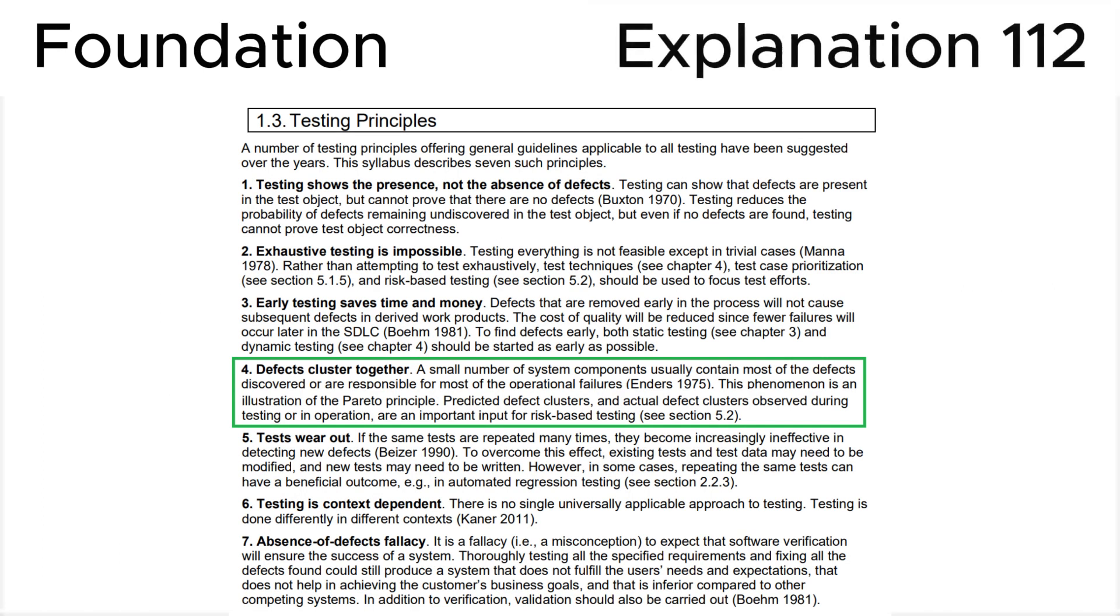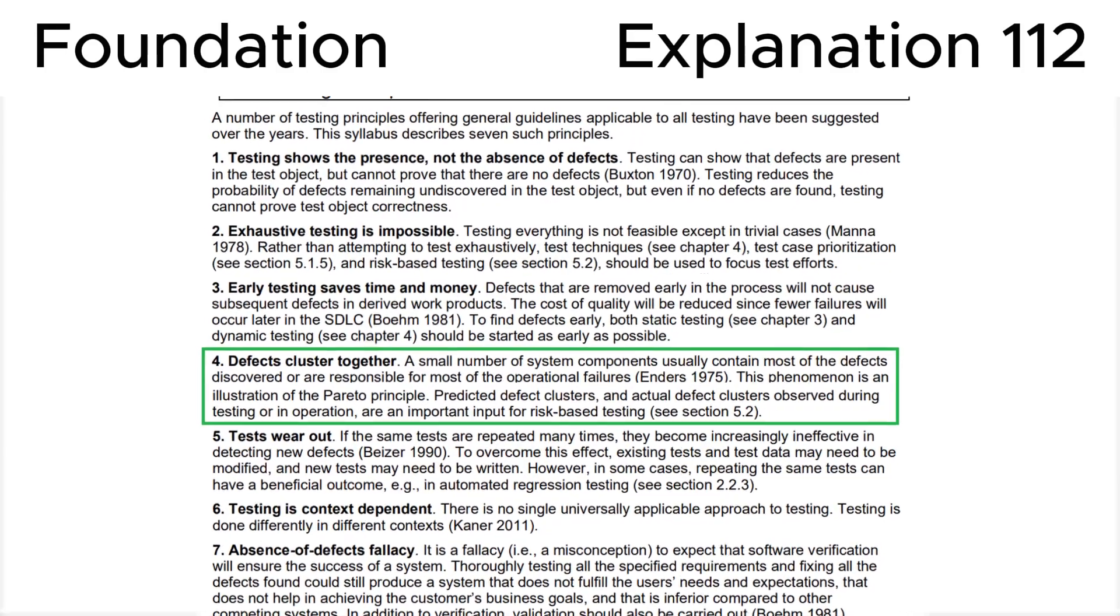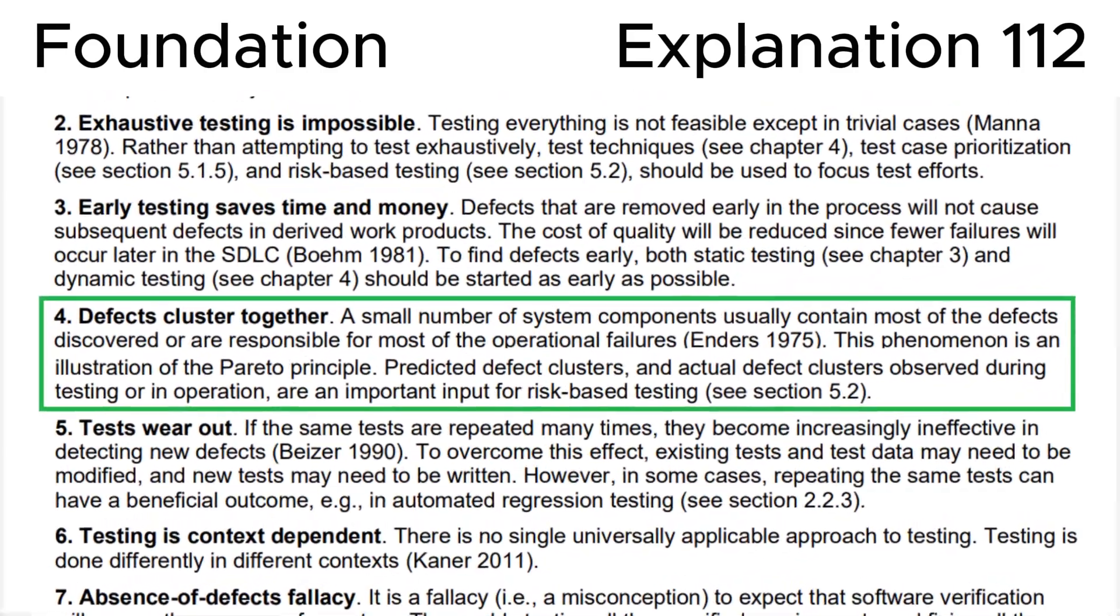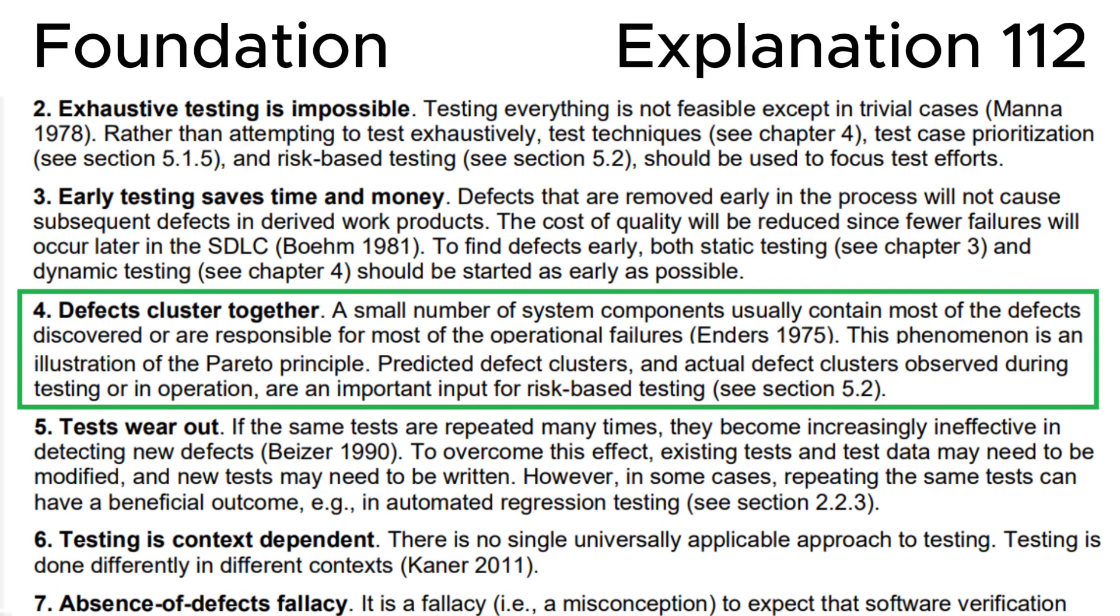Finally, let's look at section 1.3 Testing Principles in the ISTQB syllabus, where we can see that testing principle 4 is 'defects cluster together'. A small number of system components usually contain most of the defects discovered or are responsible for most of the operational failures. This phenomenon is an illustration of the Pareto principle. Predicted defect clusters and actual defect clusters observed during testing or in operation are an important input for risk-based testing. This leads us to the correct answer D.